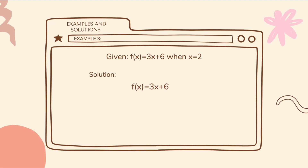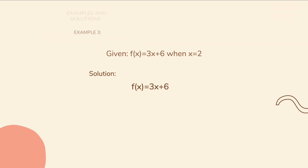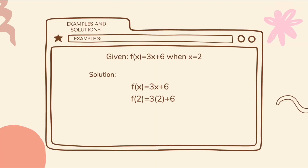Example number 3. For the third example, we have the given f of x is equal to 3x plus 6, when x is equal to 2. Again, we will substitute the given to x. So it becomes f of 2 is equal to 3 times 2 plus 6. Simplify.